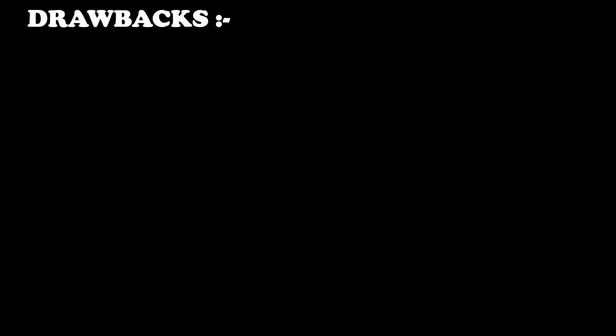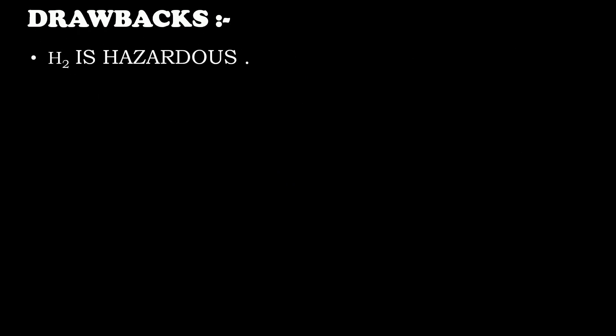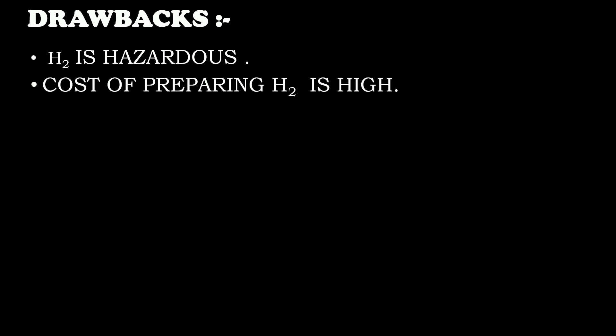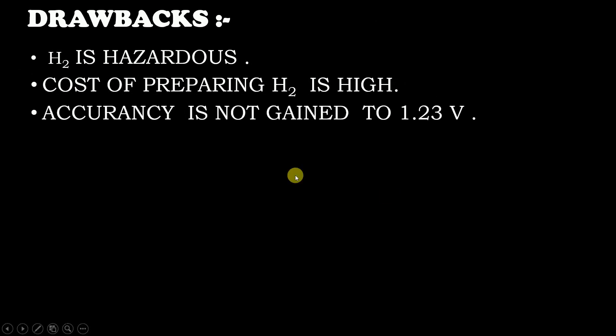Now let's understand the drawbacks. The first drawback is that H2 gas is hazardous to handle — it is not safe. The second is that the cost of preparing H2 gas is very high. The third drawback is that, although the standard cell potential is 1.23 volts, in practice we actually get something less than 1.23 volts.